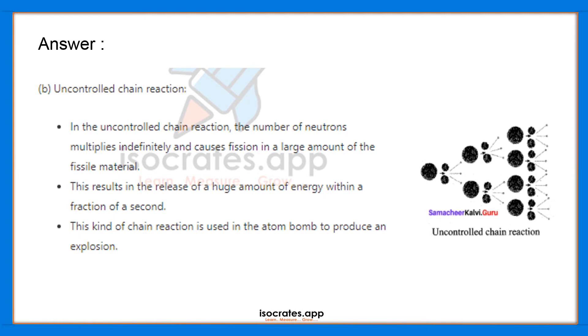B: Uncontrolled chain reaction. In the uncontrolled chain reaction, the number of neutrons multiplies indefinitely and causes fission in a large amount of fissile material. This results in the release of a huge amount of energy within a fraction of seconds.